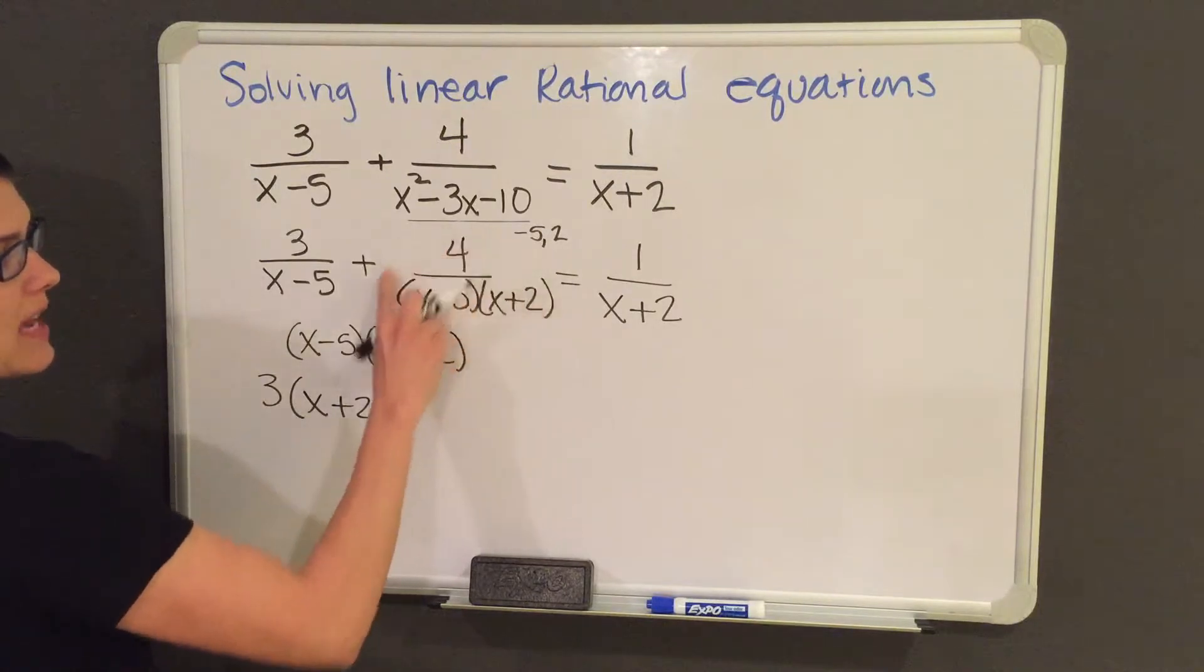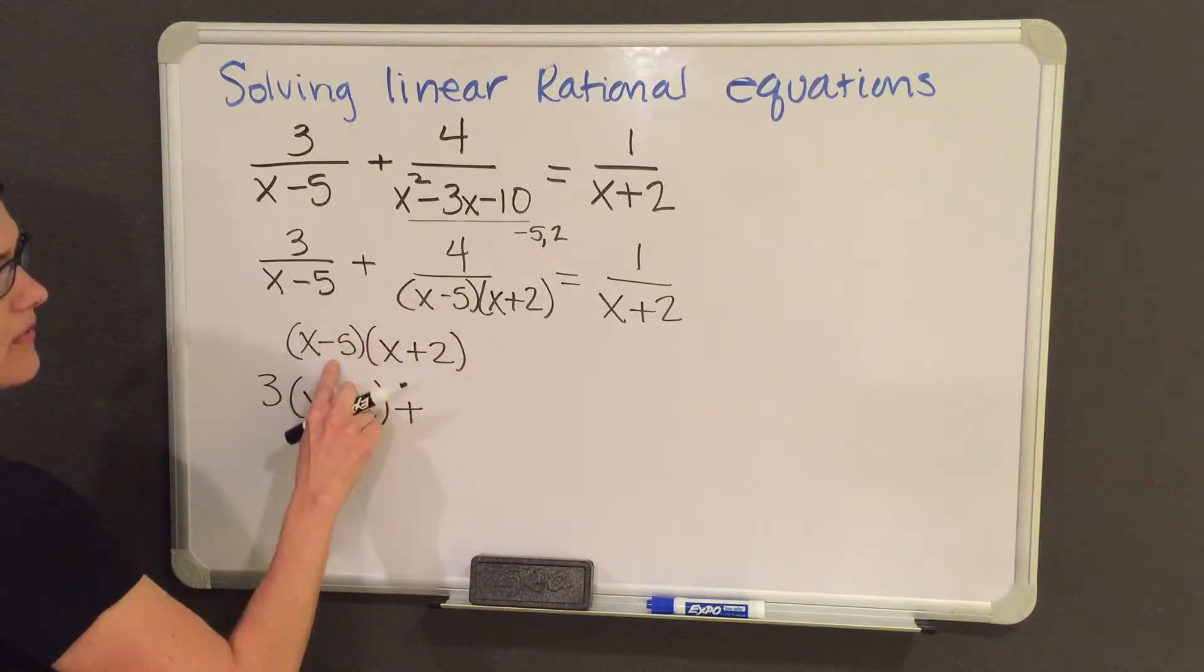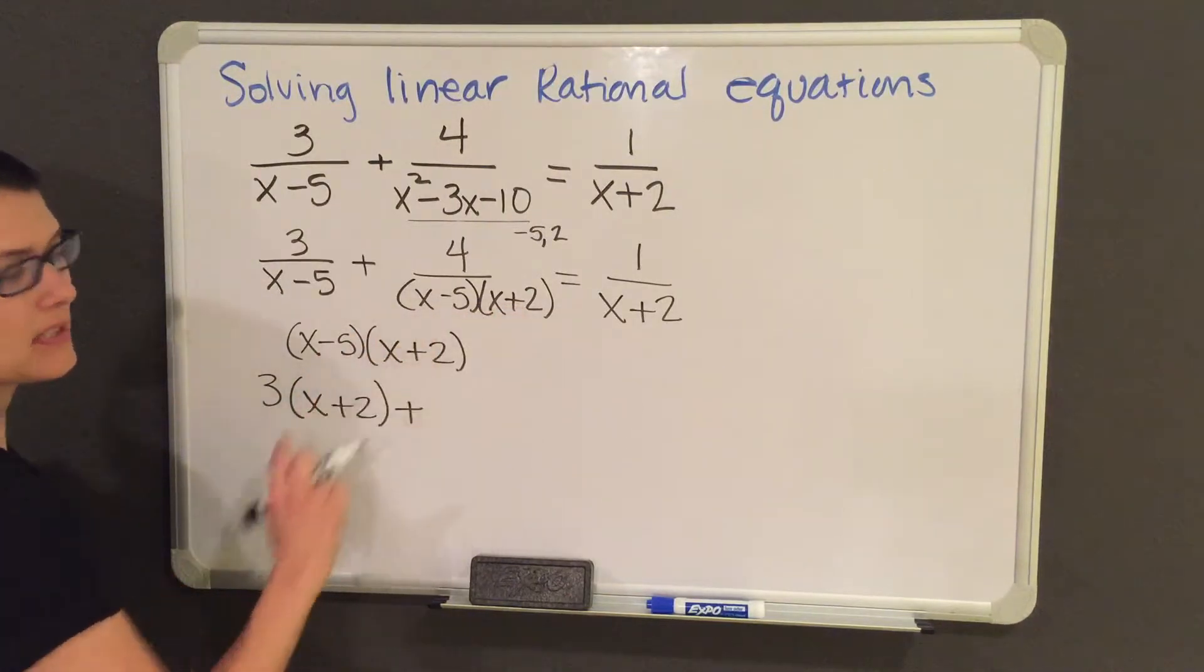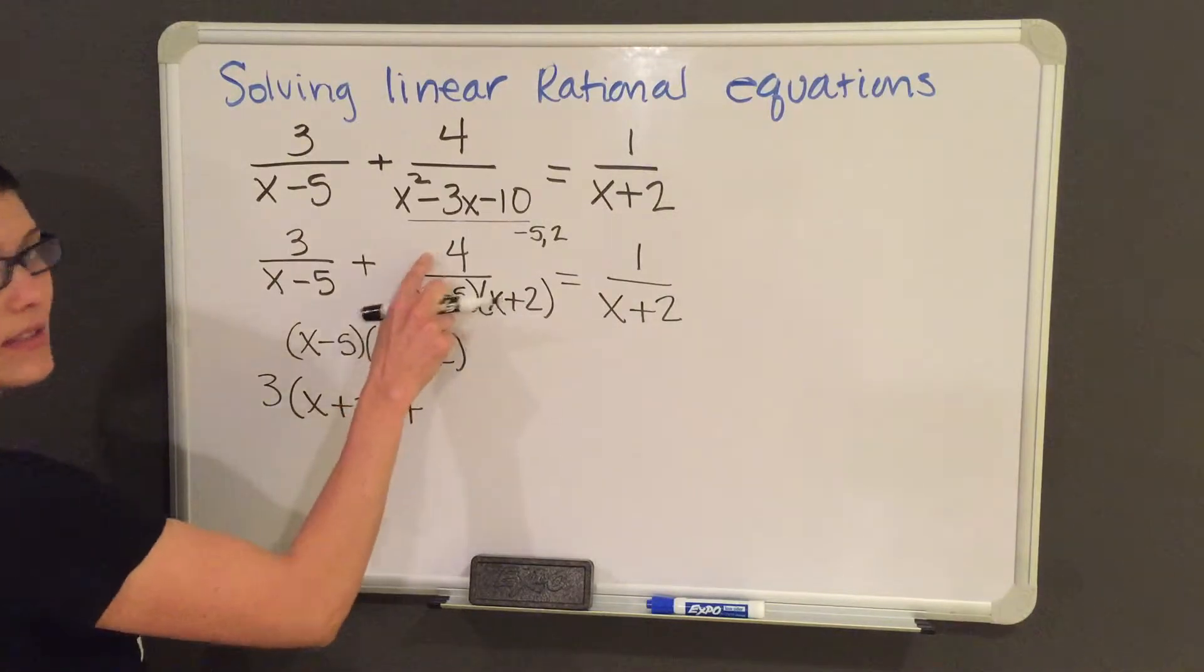Now I'm going to go to my second term. If I multiply my second term by this common denominator, the x minus 5s and the x plus 2s cancel out. So all I am left with is 4.